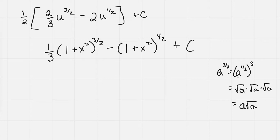So I'm seeing something very familiar here. This would be 1 third times 1 plus x squared, all times the square root of 1 plus x squared, minus the square root of 1 plus x squared, and all of that plus c.